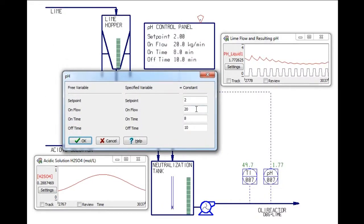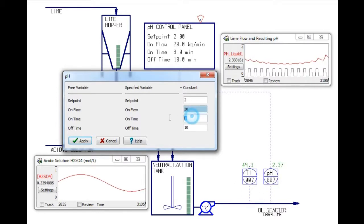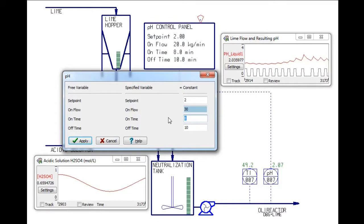First, I will increase the amount of lime fed from 20 to 30 kg per minute. I've done this because at times when the incoming acid concentration is high, the controller has trouble keeping up.